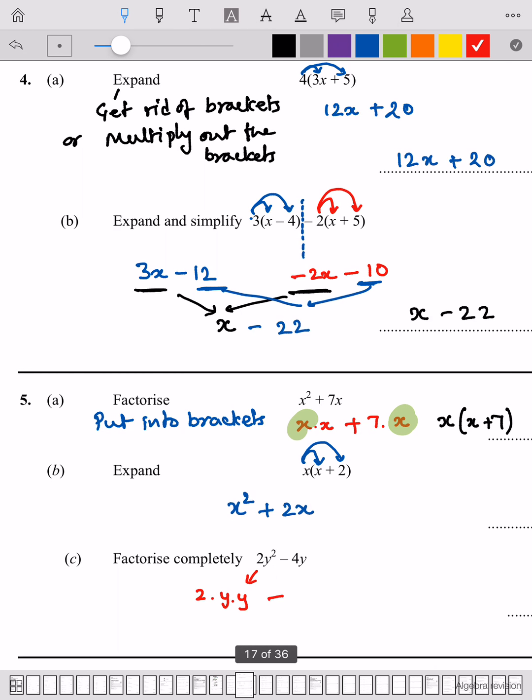Highlight the common bit. Anything common goes outside the bracket, so 2y is outside the bracket, and what's left over is y minus 2.